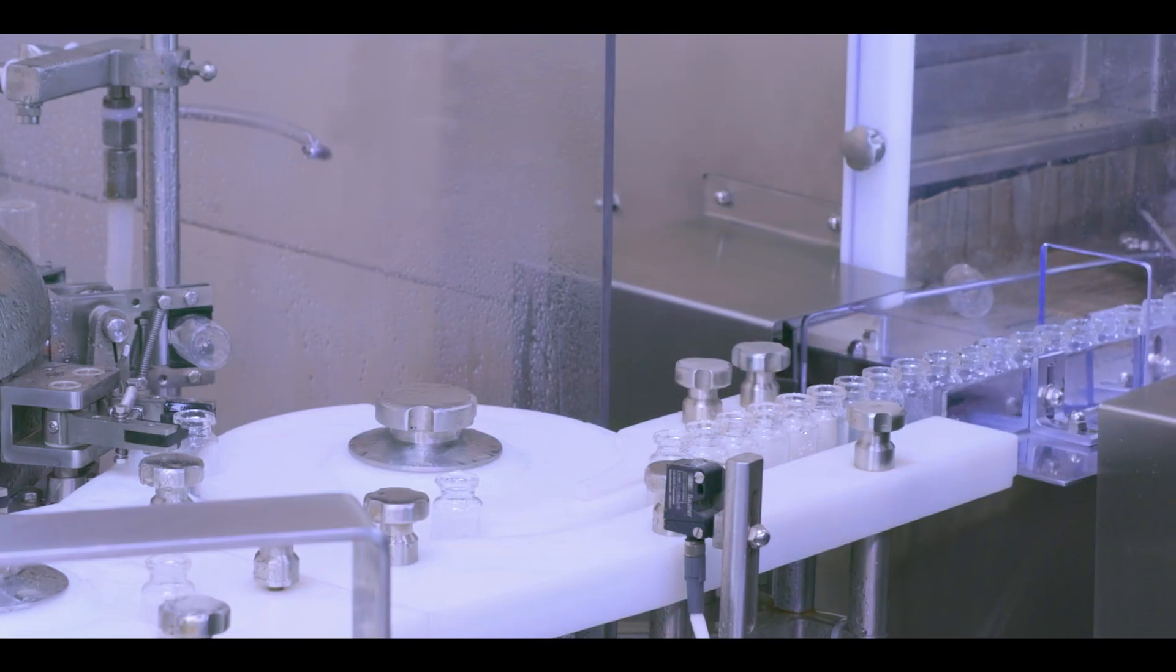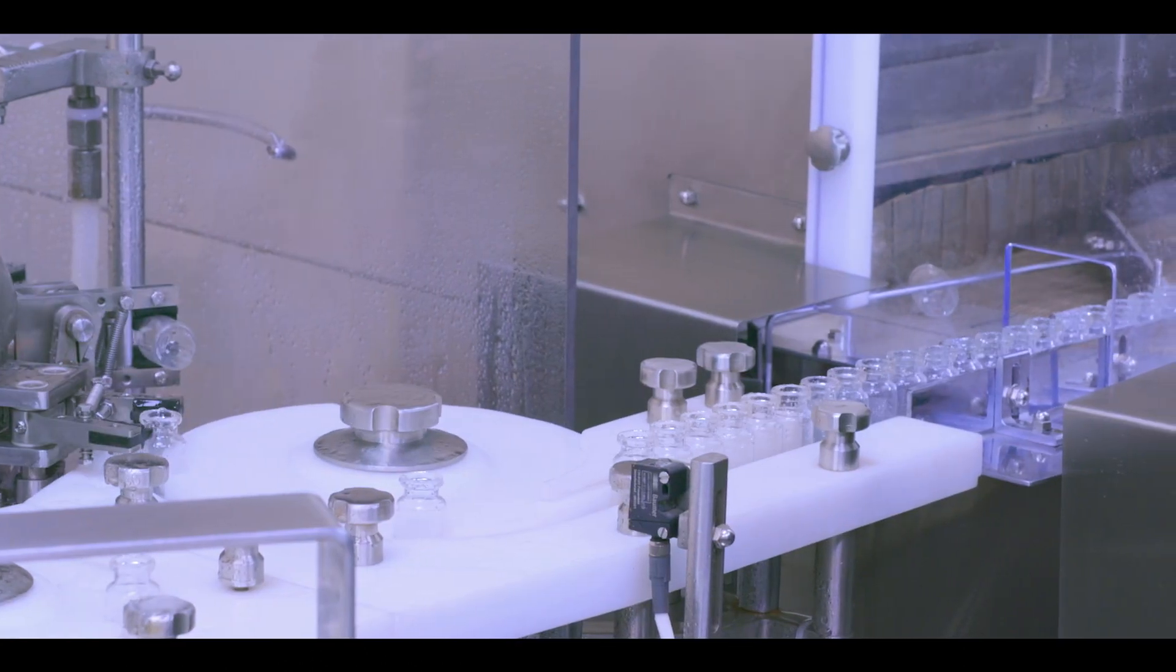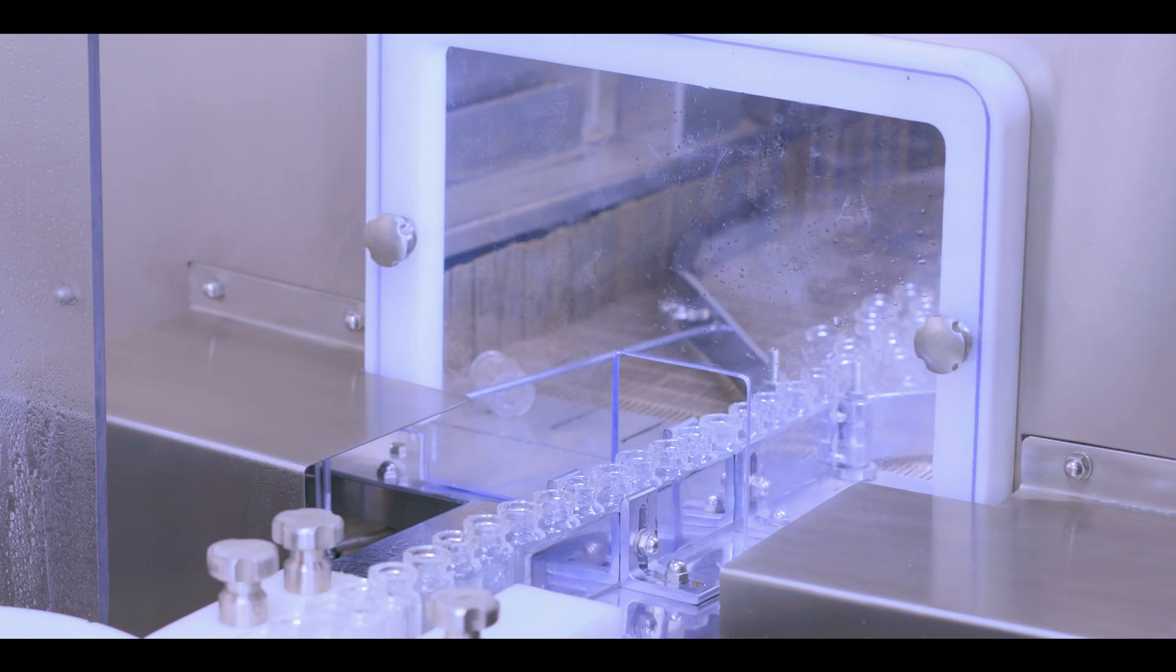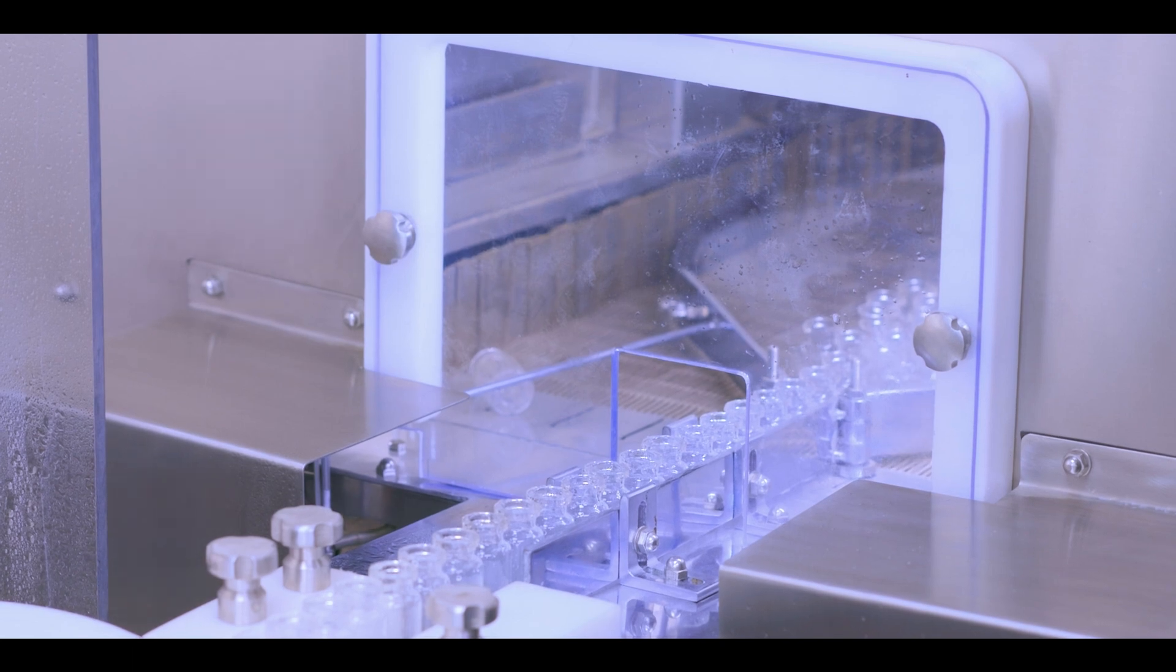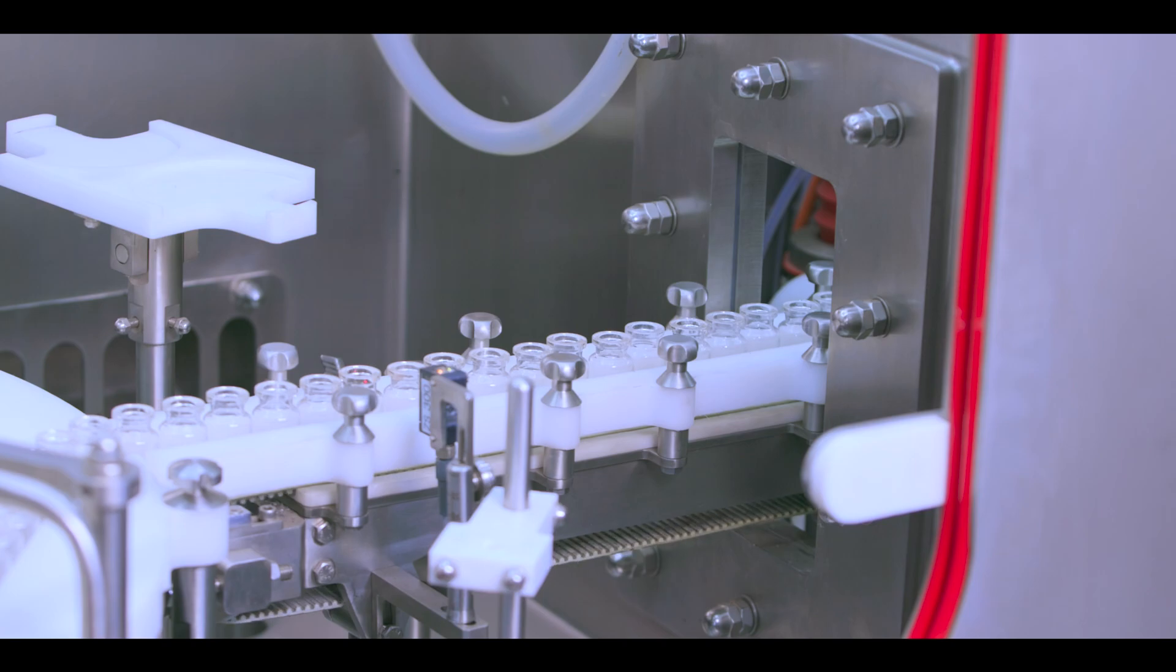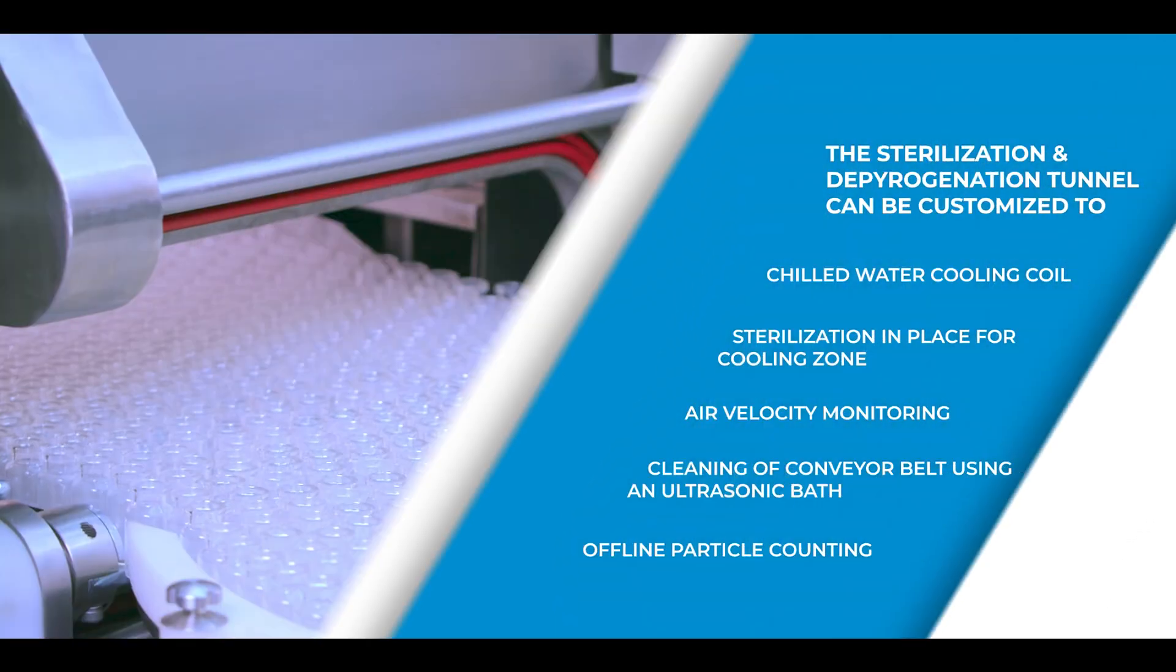The sterilization and depyrogenation tunnel includes a drying zone, a hot zone, and a cooling zone. The vials are depyrogenated by heating them to a temperature more than 300 degrees Celsius.